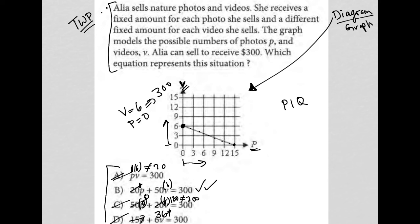Just realize that anytime you have a graph, you can always take an ordered pair out of that graph. Use that to plug into the answer choices in order to find the correct answer.